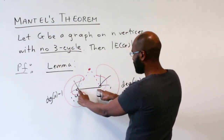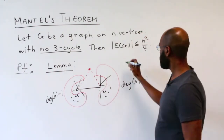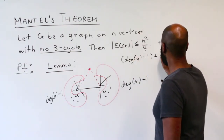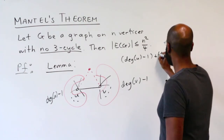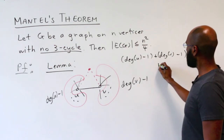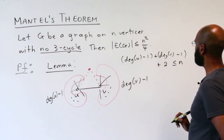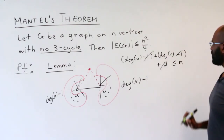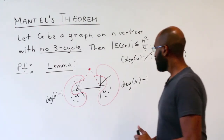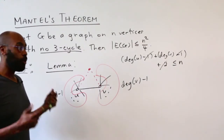So the sum of the number of vertices in both clouds, plus the two vertices u and v themselves, is bounded above by n, the total number of vertices. This gives us: (degree of u − 1) + (degree of v − 1) + 2 ≤ n. The negative ones cancel with the two, giving us that the degree of u plus the degree of v is at most n. We'll write this lemma in the corner because we'll use it in both proofs.